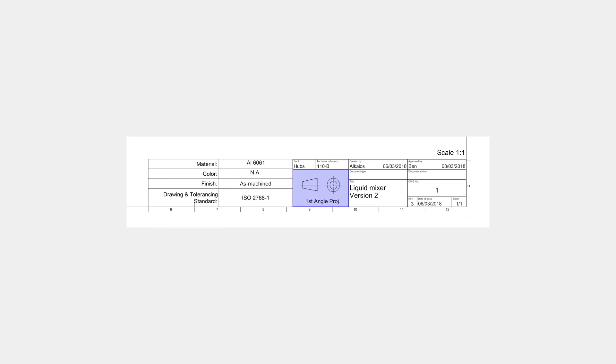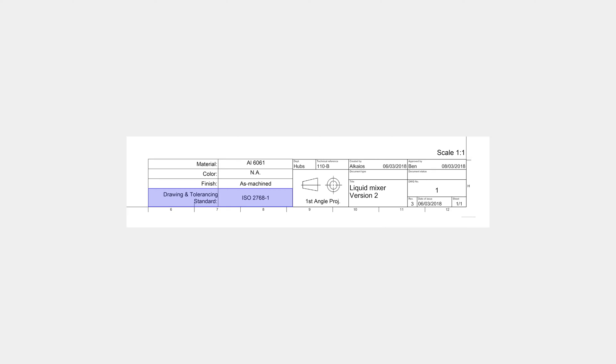Another element that's usually present in or near the title block is the angle projection. The angle projection determines the way the views are arranged in the drawing. Typically, drawings that use ASME standards — US and Australia — use third angle projection, and ISO and DIN standards — Europe — use first angle projection.